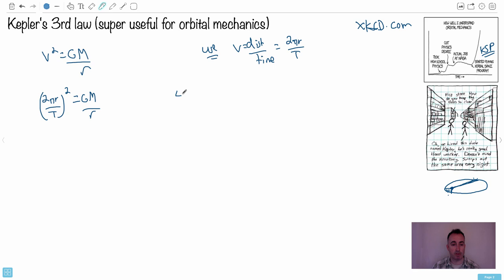If we do this really carefully, we take our time, we square everything. So we end up with a 4, because that's 2 squared, times π squared times r squared over T squared. That equals GM over r. You see, I can move my r over here.